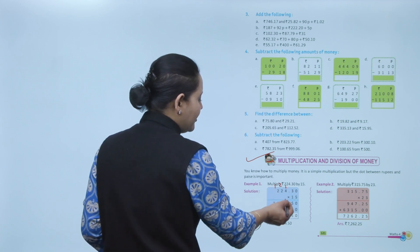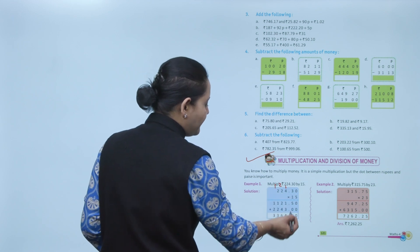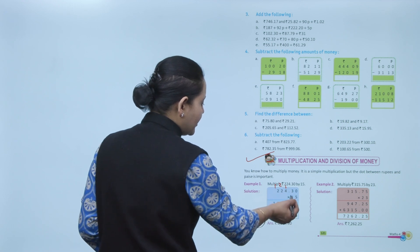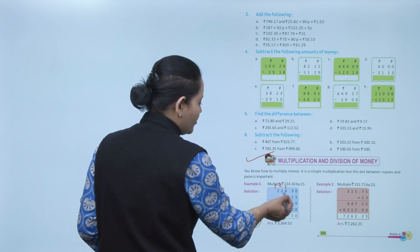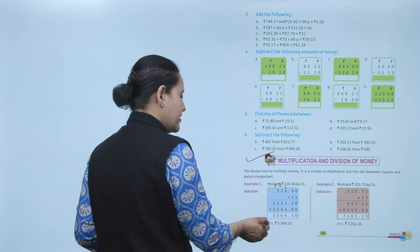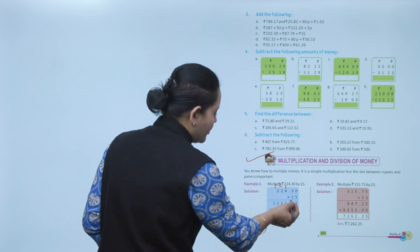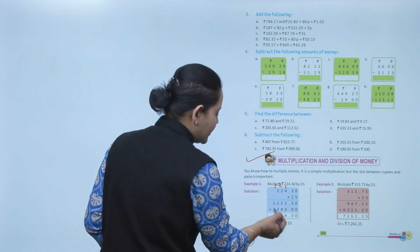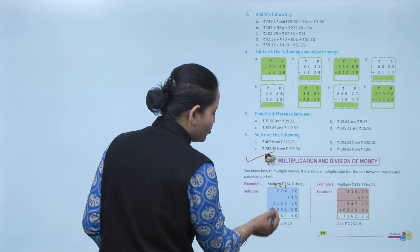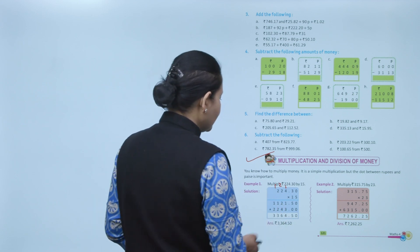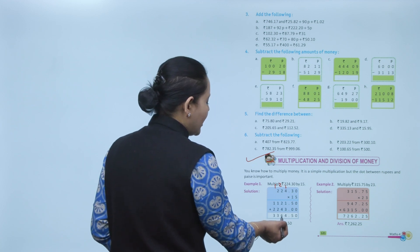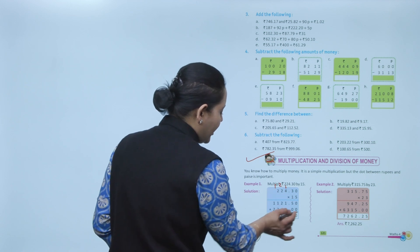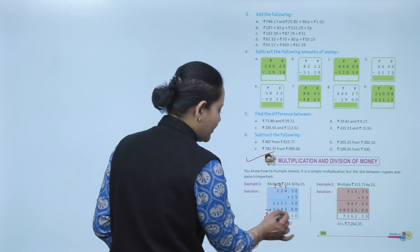Then multiply by 1: place a zero first, then 1 ones are 1 for each digit — 3, 4, 2, 2. Now add both rows together. The total is rupees 3364.50. Place the decimal point in the same position. This is how we multiply money.